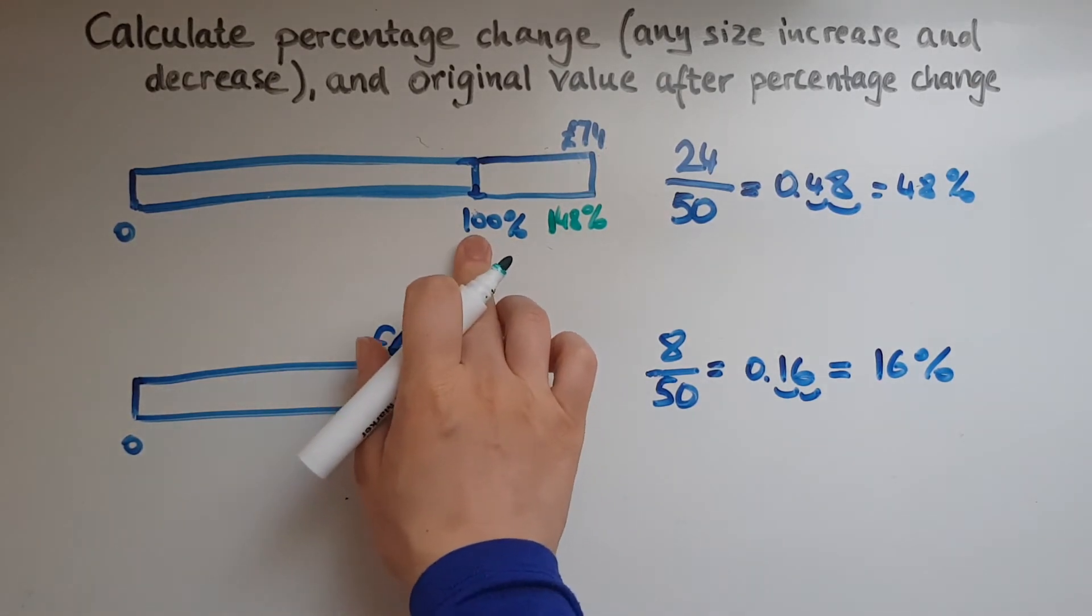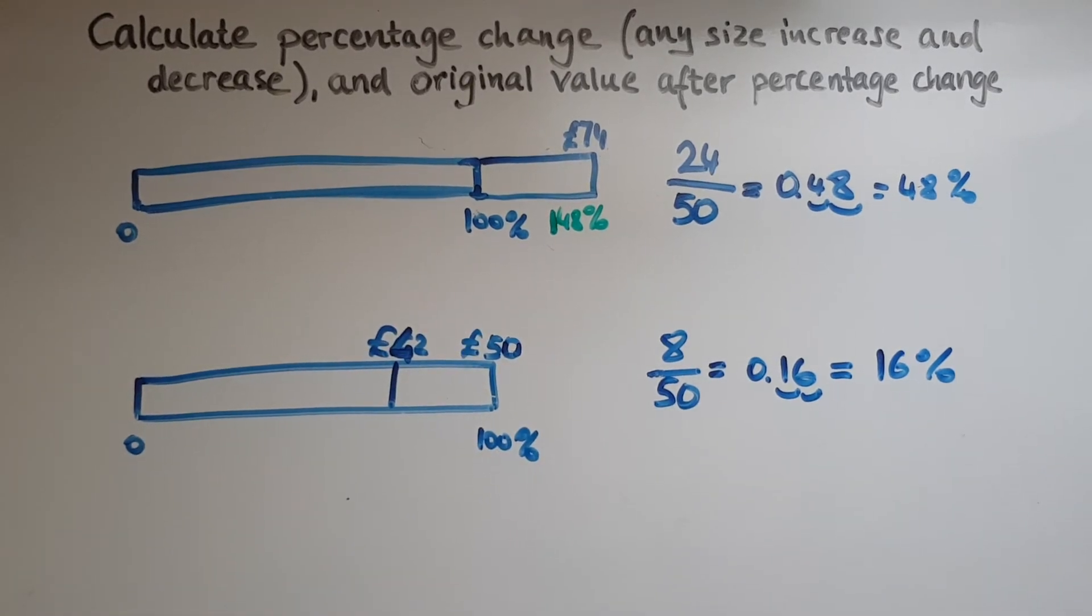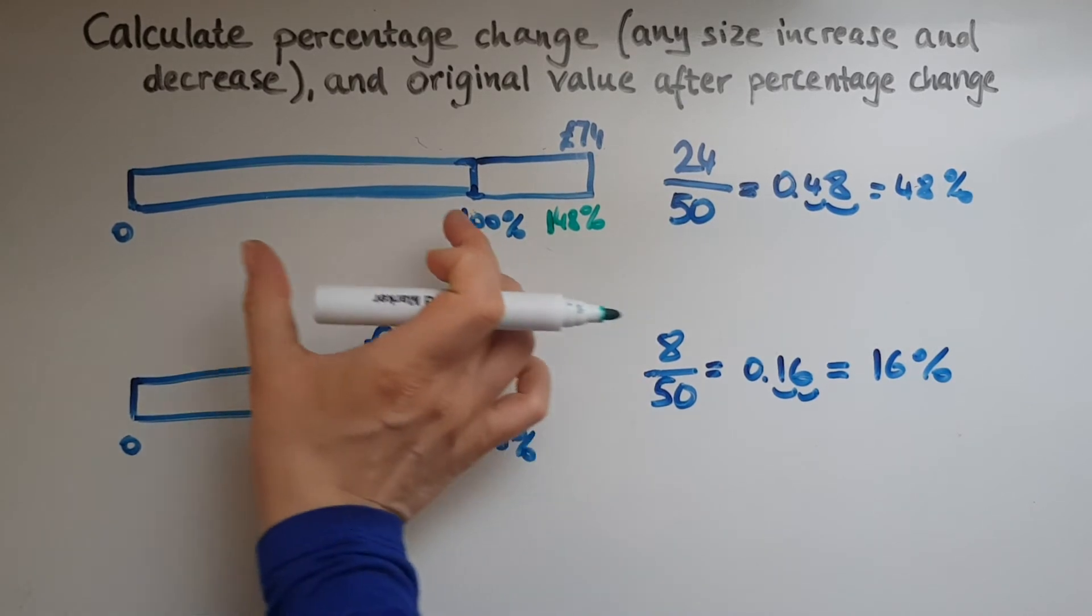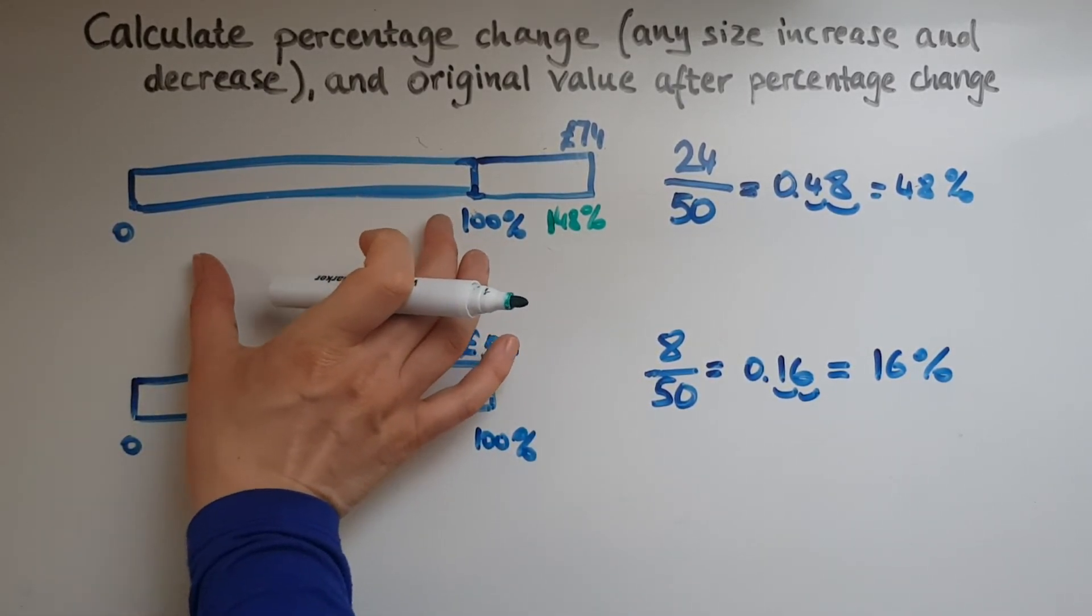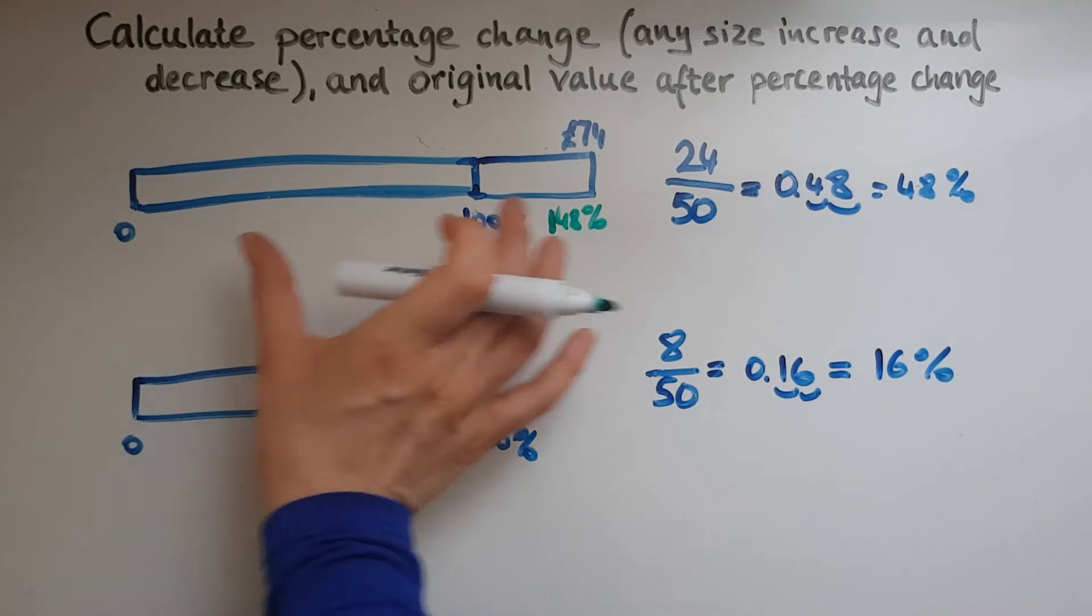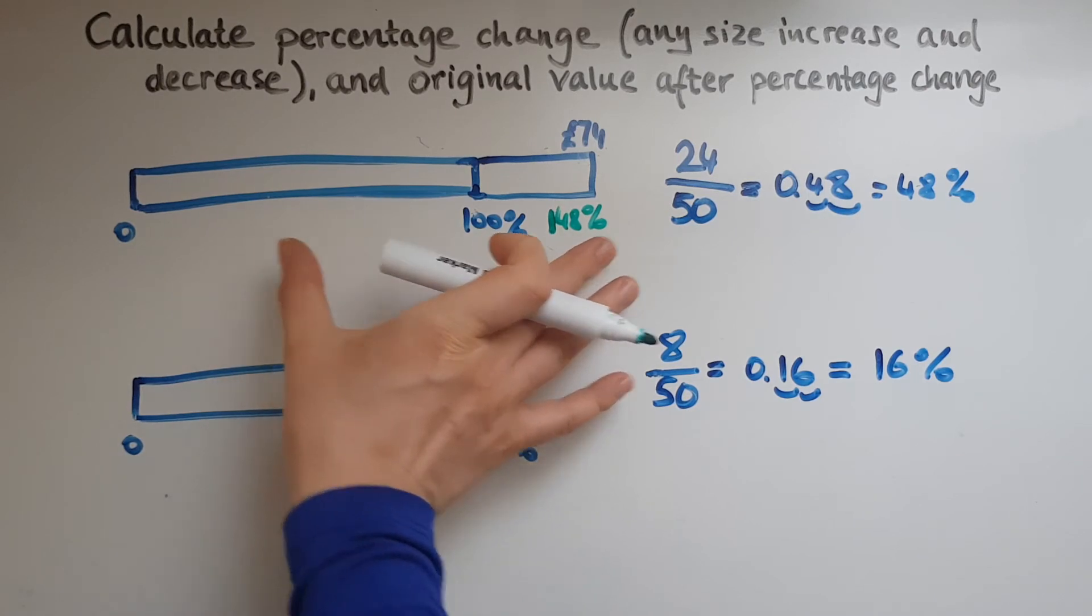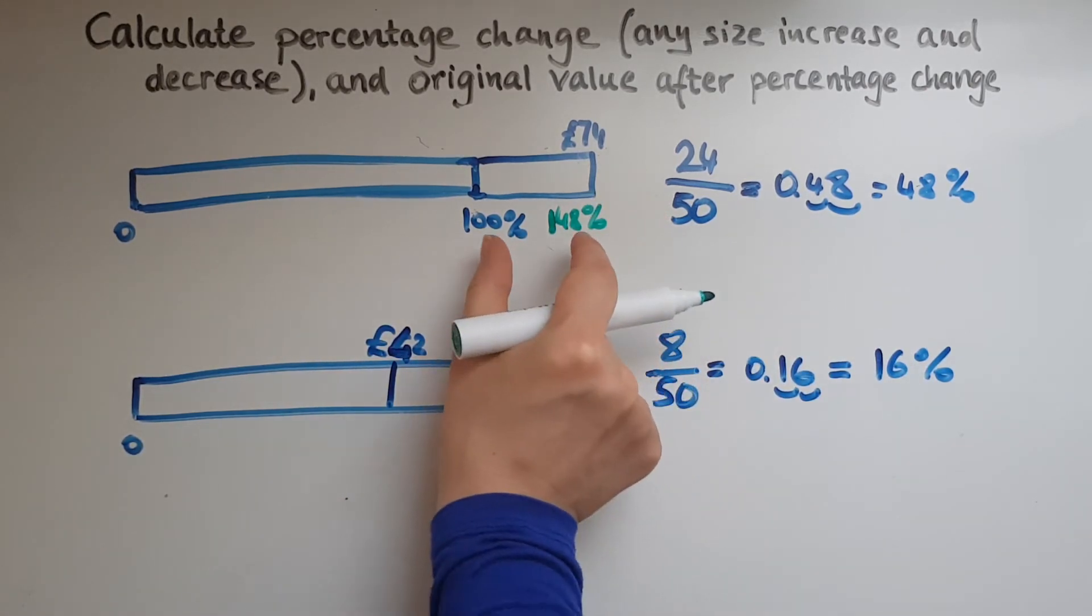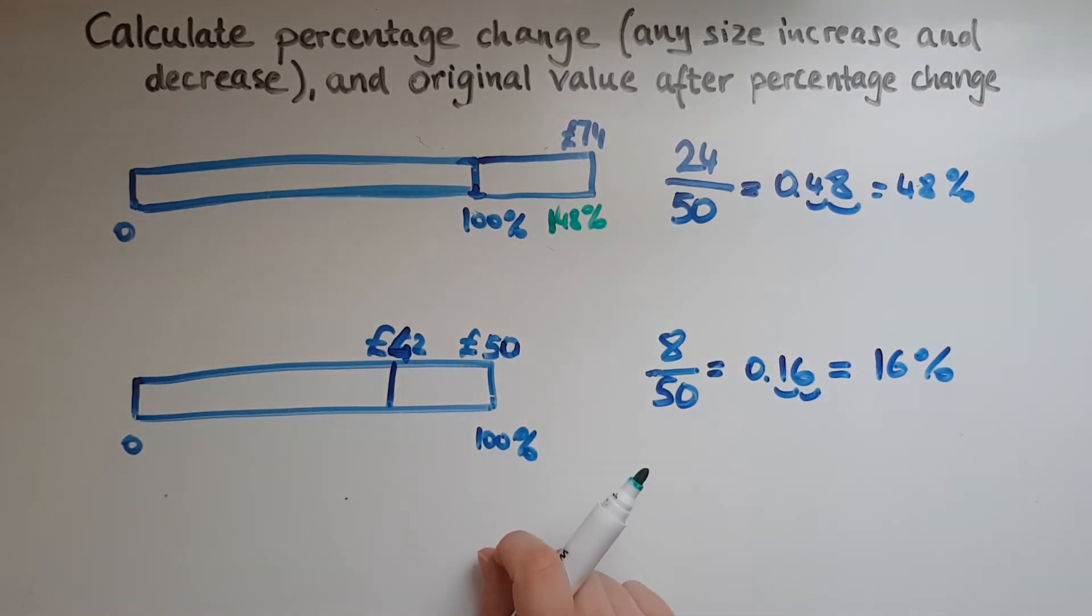What we need to know is what was the value at 100%. So what this means is that rather than splitting the number by 100 to get 1%, now we've got to split that 74 by 148 in order to get 1% because we've got more of it. We've got 100 and then 48 as well. So in total that is 148.